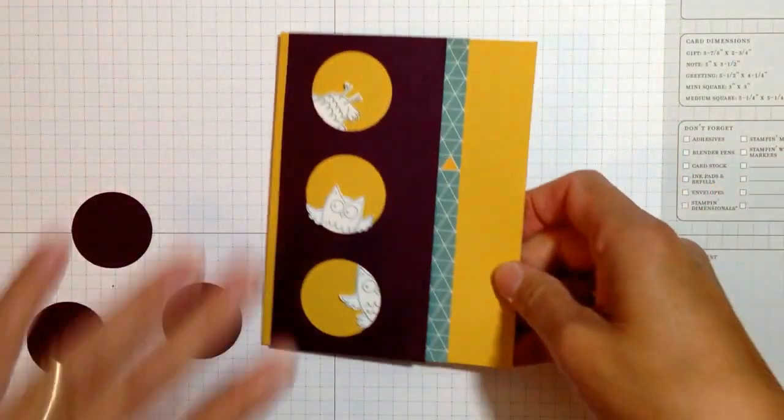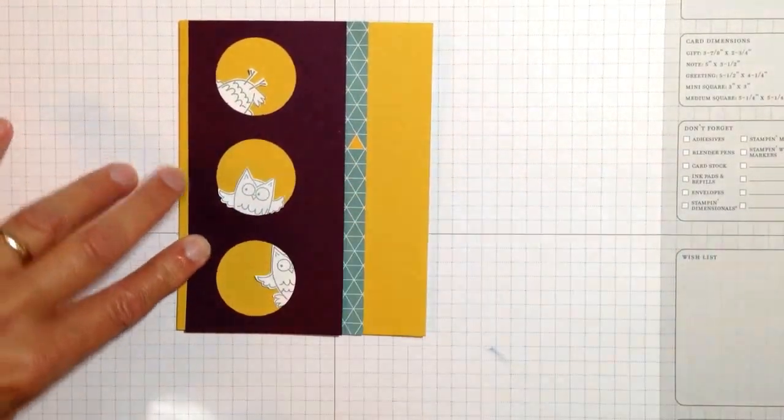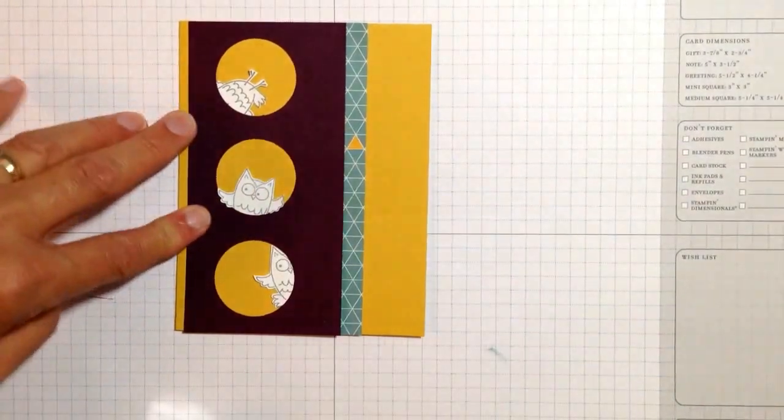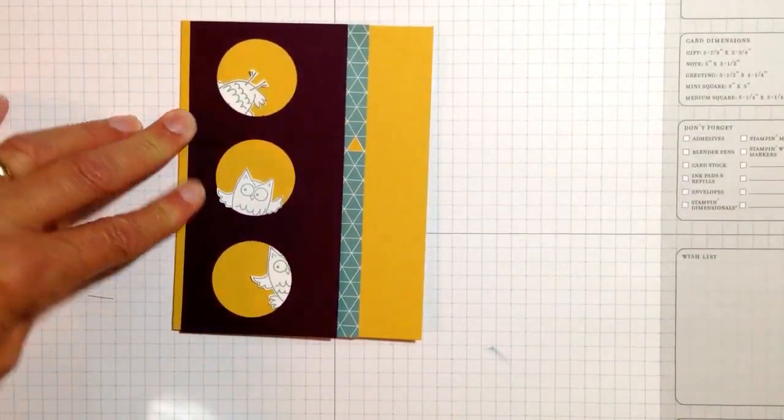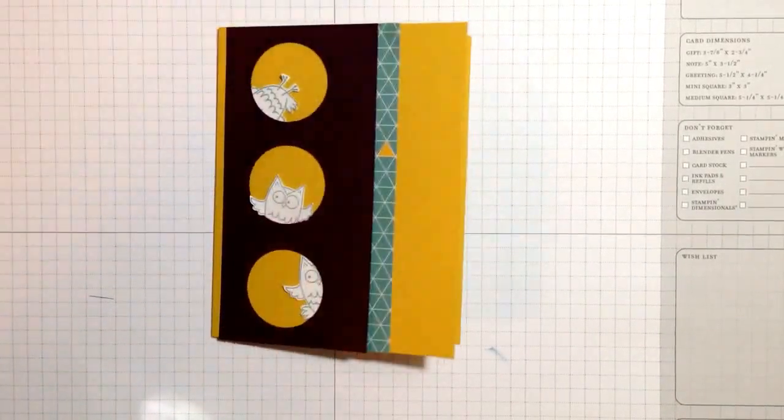Then I cut out just the parts of the owl that are going to be exposed and put that on, add a little trim, and fun card! This would be fun to do with zoo animals, any little animals that would be fun to be peeking out.